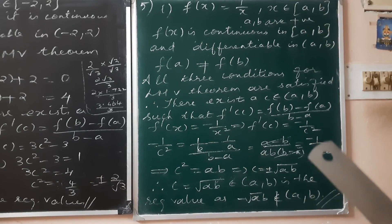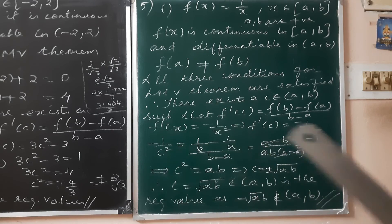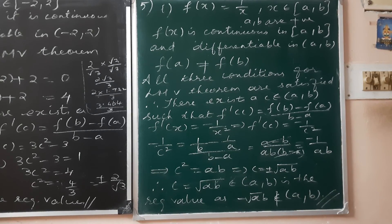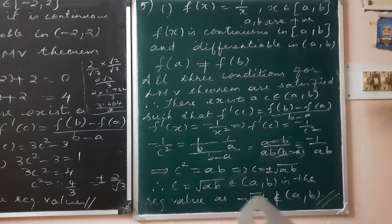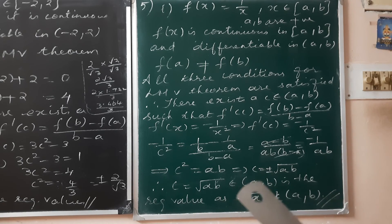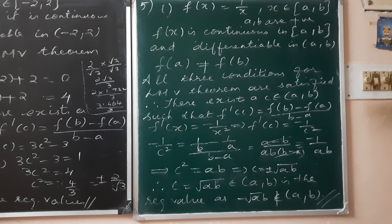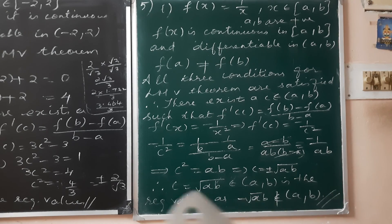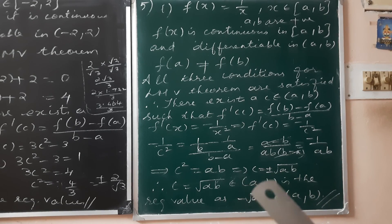So minus 1/c² equals minus 1/ab. The negatives cancel, numerators are equal, so denominators are equal: c² = ab, giving c = ±√(ab). Since [a, b] is a purely positive interval, minus √(ab) does not belong to the open interval (a, b). Therefore, c = √(ab) belonging to the open interval (a, b) is the required value. This is what we are asked to prove.